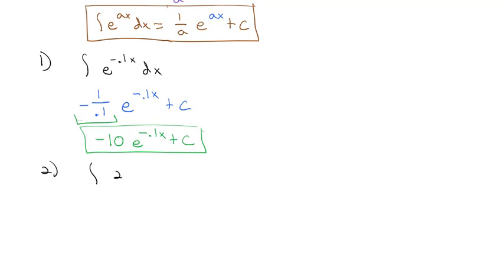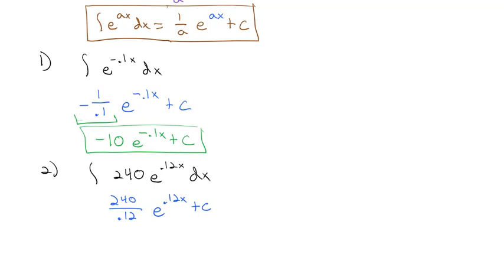If we want the antiderivative of 240 e to the 0.12x dx, using our shortcut, we know it's going to be 240 divided by the coefficient 0.12 times e to the 0.12x plus a constant. Simplifying, 240 divided by 0.12 turns out to be 2,000 e to the 0.12x plus our constant. And that saves us the work of substitution when dealing with just e to some constant times x.